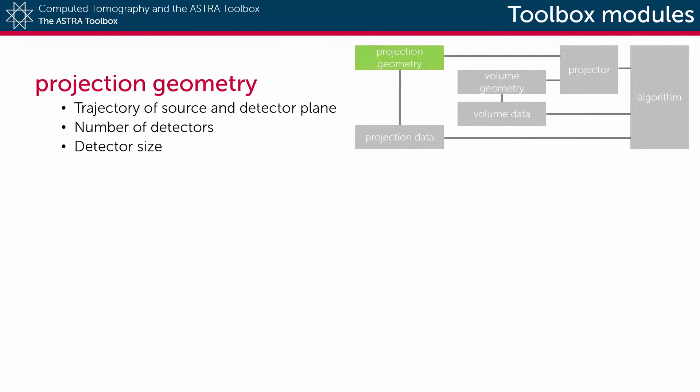The projection geometry is a structure that defines the size of the x-ray detector as well as the trajectory of the x-ray source and detector as they rotate around the center of origin, also referred to as the center of rotation.